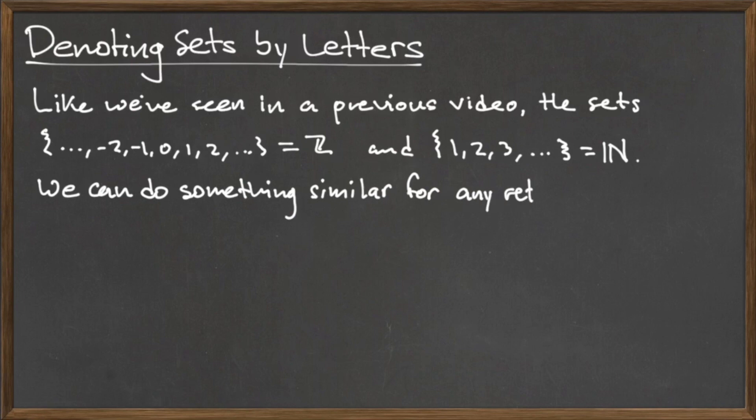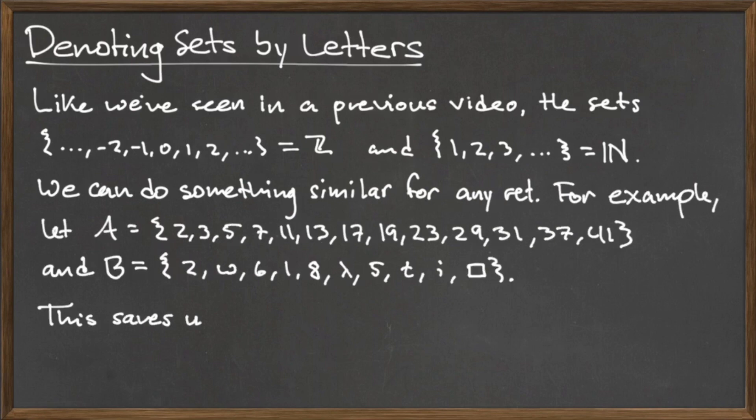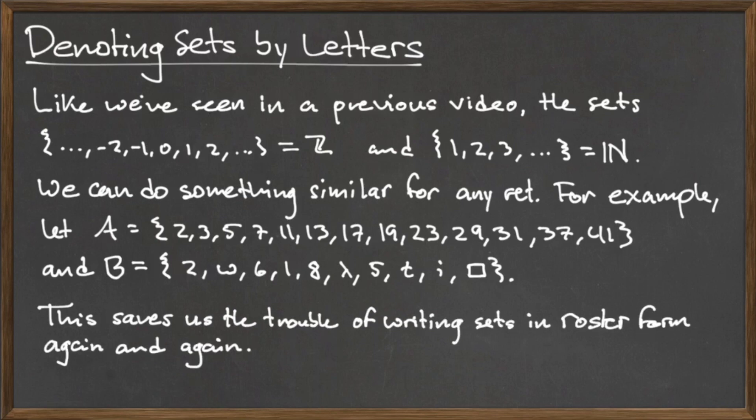While we reserve the use of blackboard characters for certain special sets, we can represent any regular set by a capital letter, similar to how we use variables as lowercase letters. To use this notation, we first write down the capital letter of our choice, followed by the equal sign, and then the roster form notation for the set. Denoting a set with a capital letter allows us to use the letter every time we want to reference the set, instead of having to write the roster form every single time.